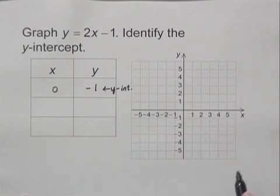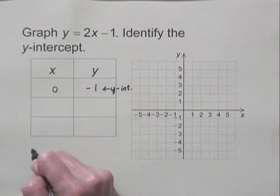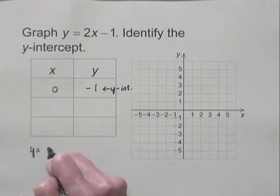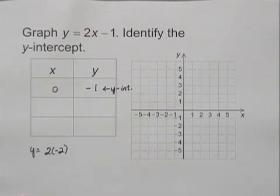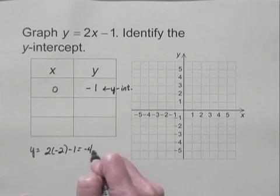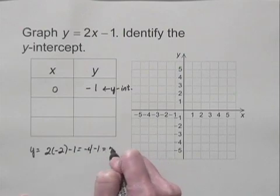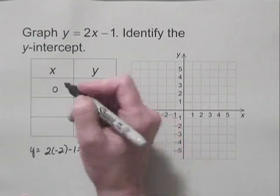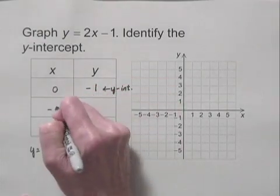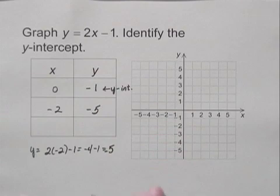Now let's find a couple other points on the line. When x is negative 2, y is equal to 2 times negative 2 minus 1, which is negative 4 minus 1, or negative 5. So I have negative 2, negative 5.